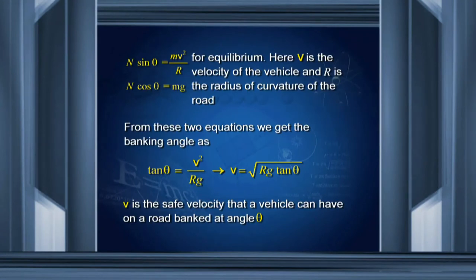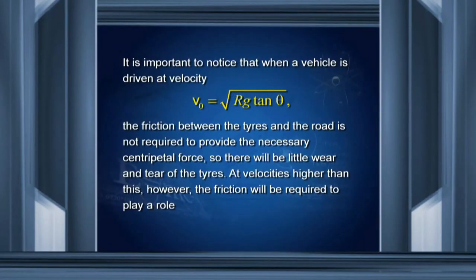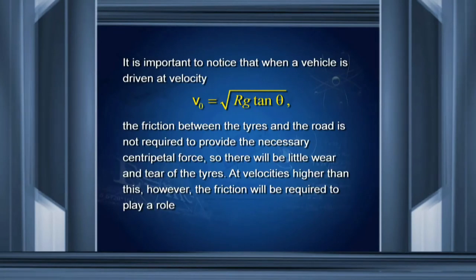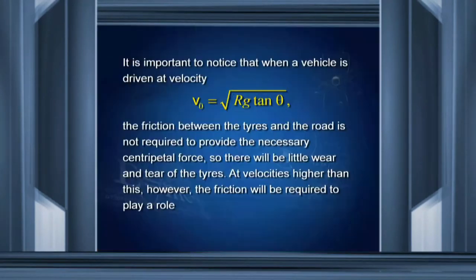If V₀ = √(rg·tanθ), then friction between the tires and the road is not required to provide the necessary centripetal force. Without friction, banking at angle θ can provide velocity V₀ for the vehicle on that curved path. If they drive at velocity V₀, friction is not needed — meaning the tires will not wear out and will last much longer. There will be little wear and tear of the tires.